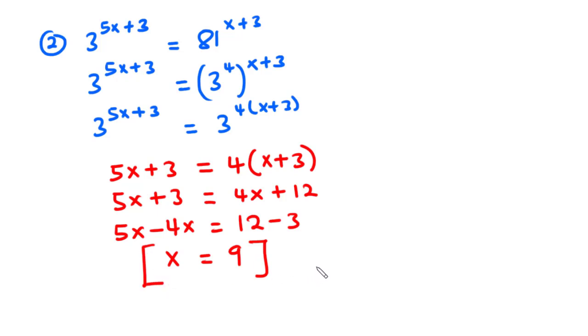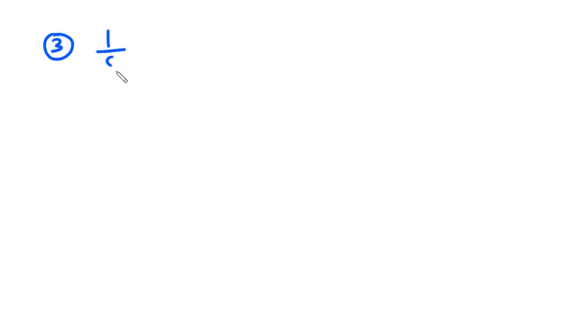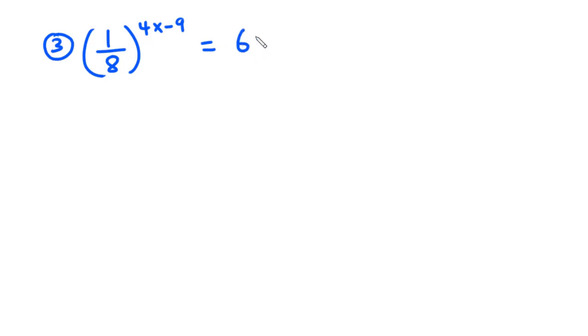Let's move on to the third example. For example 3, we have 1 over 8, all exponent 4x minus 9, equals 64 exponent 3x plus 1.